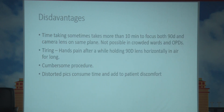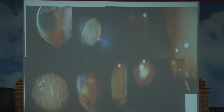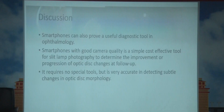Disadvantages: it is time-consuming — it takes more than 10 minutes to focus both the 90D and the camera lens on the same plane, and it is not feasible in crowded wards and OPDs. It is a very tiring procedure; your hands ache while holding the 90D lens horizontally for long periods trying to focus. It is cumbersome, and distorted pictures consume time and add to patient discomfort. As a result, it is not possible in every case or in crowded settings.